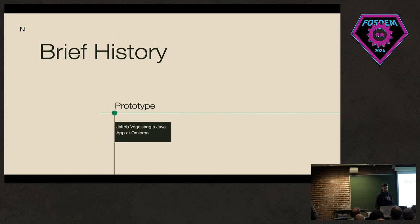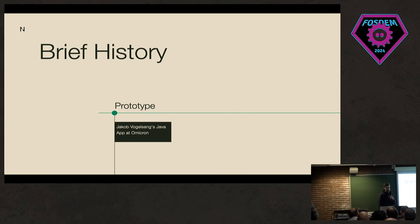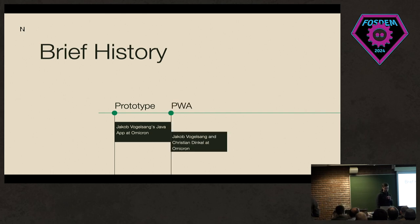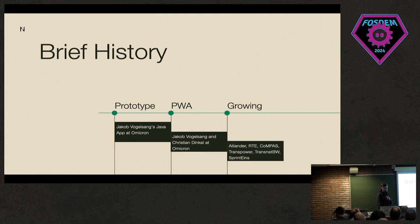OpenSCD originated at Omicron, where Jacob Fokus created a Java app to help his colleagues create multi-vendor projects, because every vendor had its own tool and interpreted the standard differently. The goal was to reach agreement not just at the specification level but also at the implementation level. Later, Christian Dinker joined and they restarted the project as a progressive web app, seeing how hard it would be to deploy and distribute a Java app to everybody.